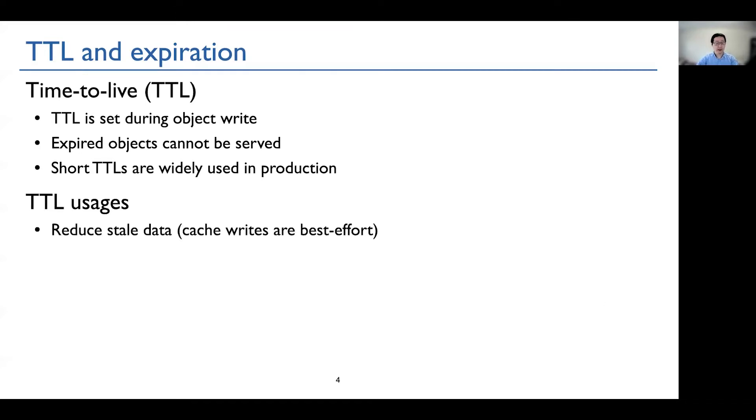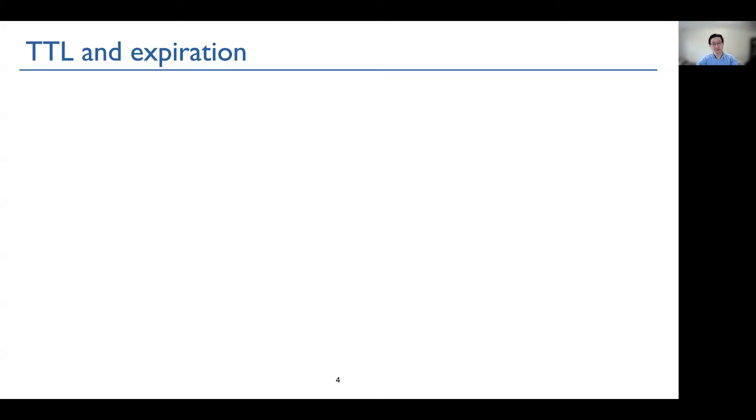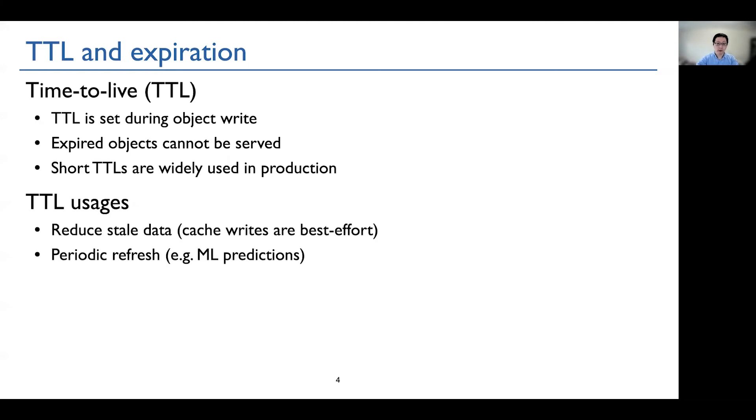There are three TTL use cases. First, TTL is used to reduce stale data, because cache writes are best effort. Therefore, it is possible that data in the cache is inconsistent with the data in the backend. Therefore, TTL is used to bound this staleness. Second, TTL is used for periodic refresh. For example, some machine learning-related computation service, which use TTL to trigger recomputation every few hours. Third, TTL is used for implicit deletion, such as rate limiters or GDPR components.